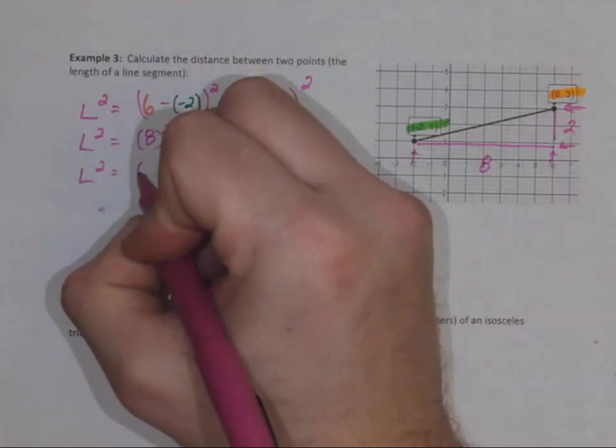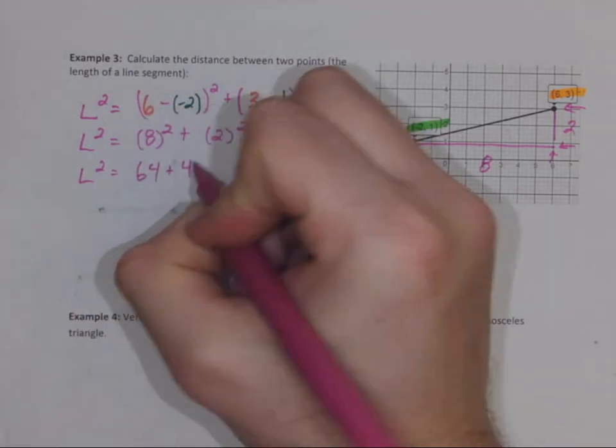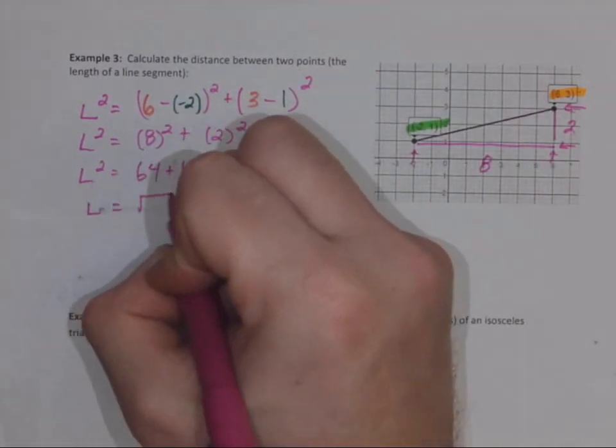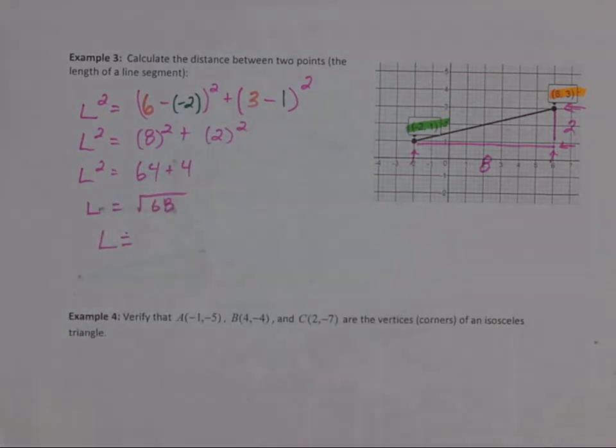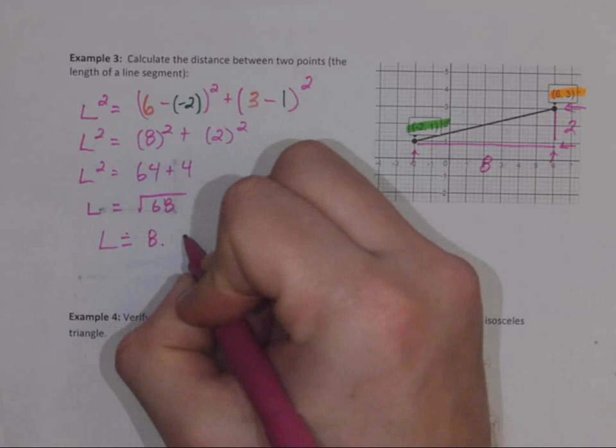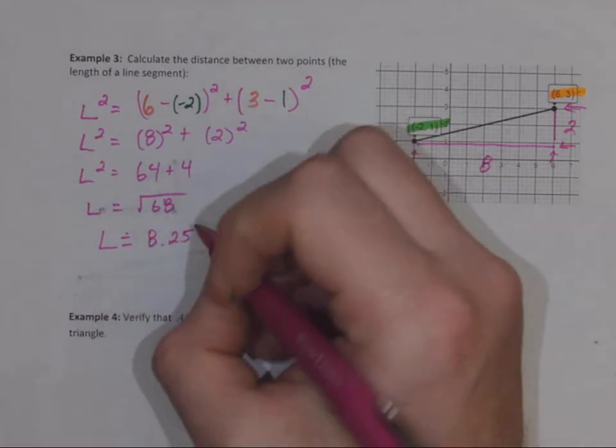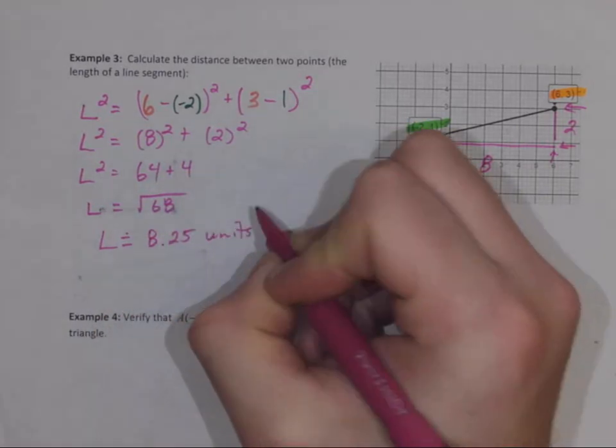Eight squared is 64 plus four. I'm going to take the square root of 68, and our length is approximately 8.246, which rounds to 8.25 units.